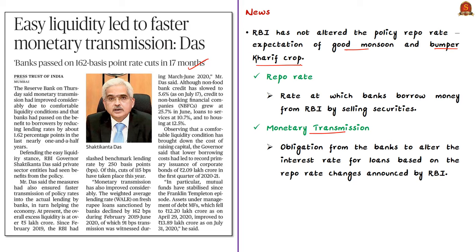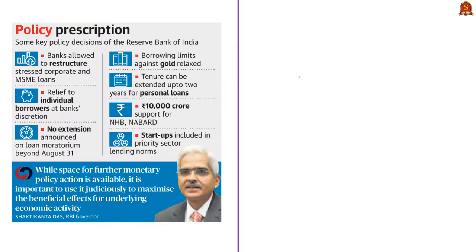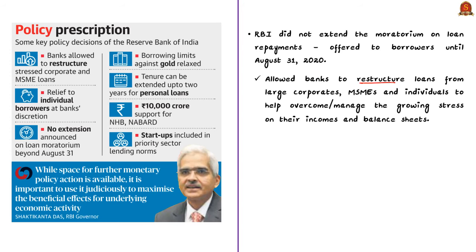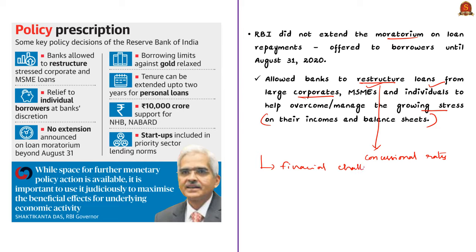The news article also states that the central bank did not extend the moratorium on loan repayments that were offered to borrowers until 31st August. However, it has allowed banks to restructure loans from large corporates, MSMEs, and also from individuals, to help these entities overcome and manage the growing stress on their incomes and balance sheets. When we say restructuring of loans, banks may give the option of concessional interest rates for the already obtained loans. These restructuring efforts may or may not include a moratorium on instalment repayments, and such restructuring helps entities facing financial challenges avoid bankruptcy, while ensuring the borrowed money will be paid back in some time.